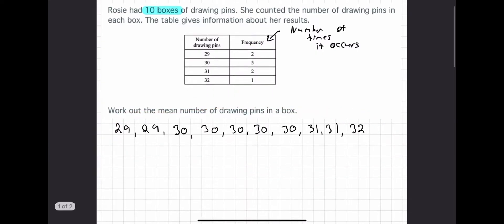To find the mean, all you need to do now is add up everything and divide by 10. Typing it into my calculator, I get 30.2. So the mean is 30.2.